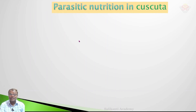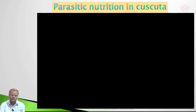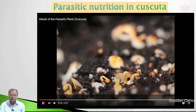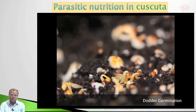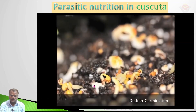Let's look at parasitic nutrition in Cuscuta. Some plants are not autotrophs — they do not have chlorophyll and are not able to prepare food material on their own. For their nutrition, they depend on other plants.